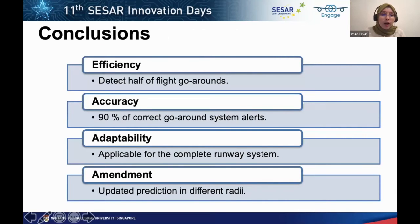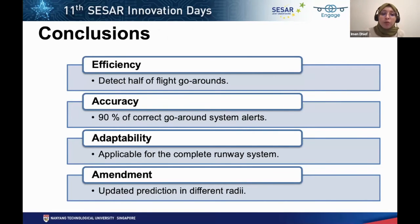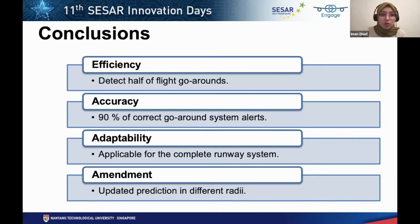In conclusion, we propose a go-around prediction model. The model can detect half of the go-arounds with 90% alert accuracy. It is applicable for a complete runway system, using go-around flights recorded for all runways at KPHL, and the prediction is updated every 2 nautical miles.